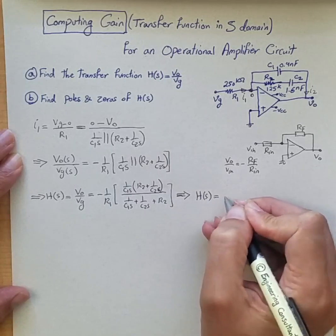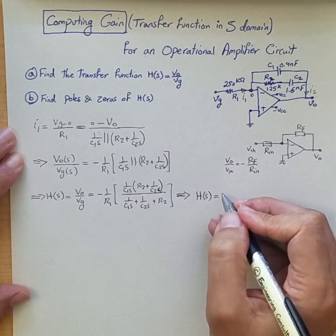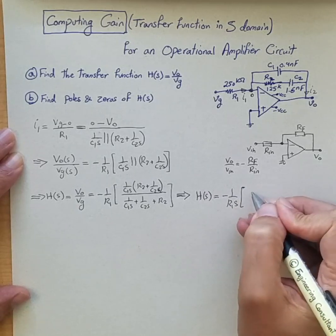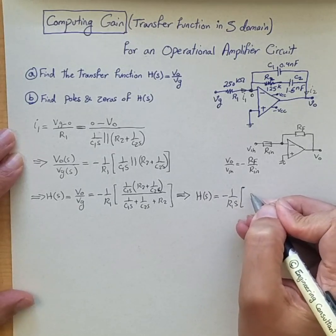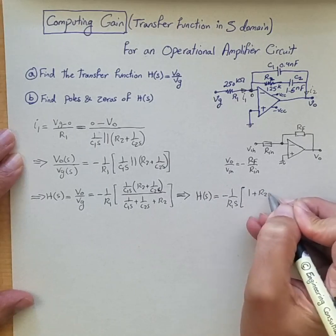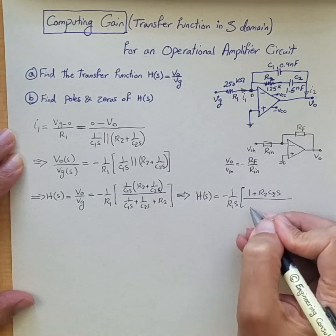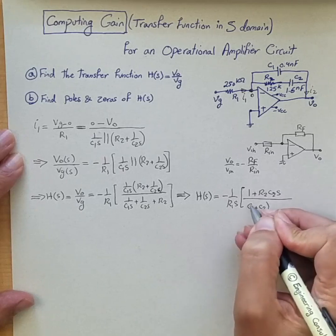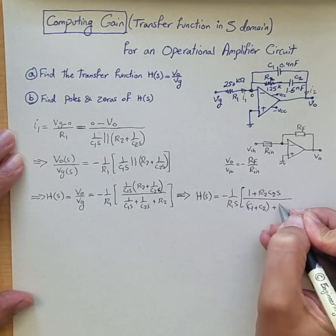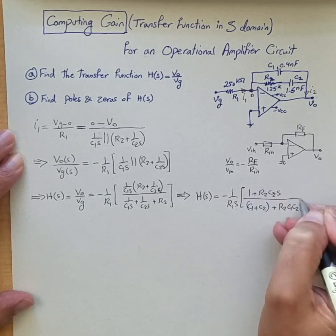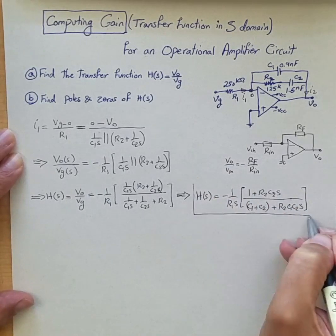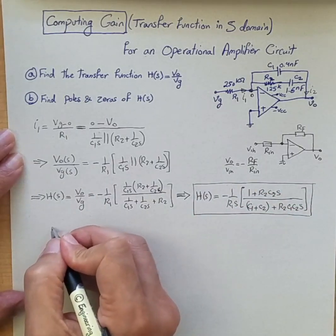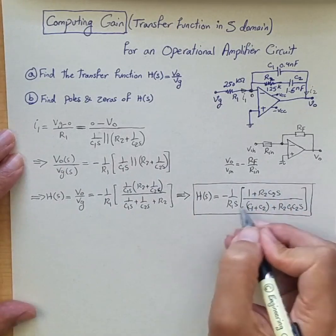Okay so if you simplify this what we find is H of S is minus 1 over R1 S, and we have 1 plus R2 C2 S, and we have C1 plus C2 plus R2 C1 C2 S. So that will be our transfer function for this op-amp circuit. And then what we can say is, of course this has 1 zero and 2 poles.